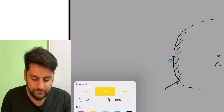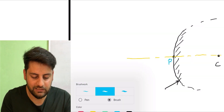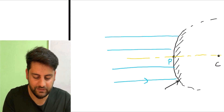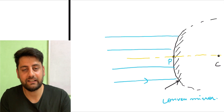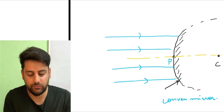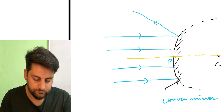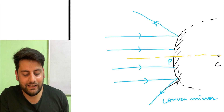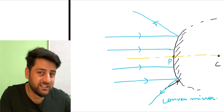Let's draw a principal axis through these points. Now suppose we have a parallel beam of light incident on it — a parallel beam of light incident on this convex mirror. Because it's a diverging mirror, it will diverge the rays. Now, as the rays are diverging, obviously they can't form a focus, because the rays are diverging and they will not meet anywhere.